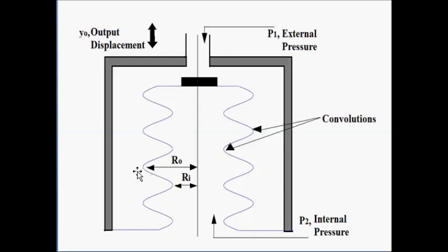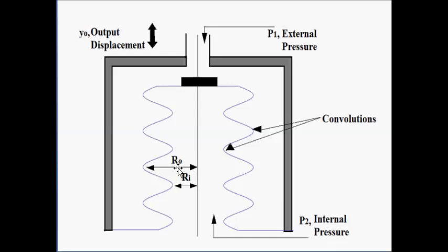These crests and troughs represent the folds or convolutions or corrugations which occur along the axis. This is a cylindrical shaped structure. These sinusoidal wave-type formations represent the folds or convolutions or corrugations. The external pressure is given by P1 and the internal pressure inside the bellow is given by P2. R subscript O is the outer radius and R subscript I is the inner radius with respect to the convolutions. This is the general design of the bellow.